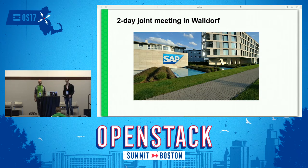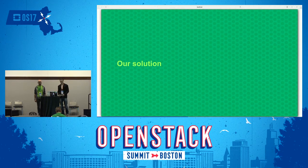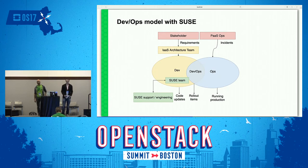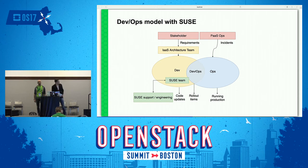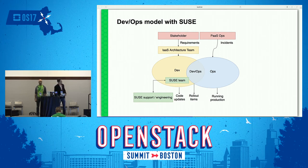We had a lot of lessons learned, so we decided to hold a two-day joint meeting with SAP and SUSE folks to see how we could improve the process. The outcome was a new DevOps model approach. As you can see in the new diagram, it looks quite different from before — with two main tracks, one for development and one for operations, and now a DevOps approach in the middle.